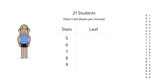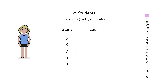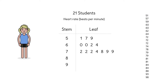Now we just list the second digits to the right of each first digit. So for 51, 57, and 59, we just write 1, 7, and 9 to the right of the 5. Those are the leaves. We do this for all the remaining heart rates.